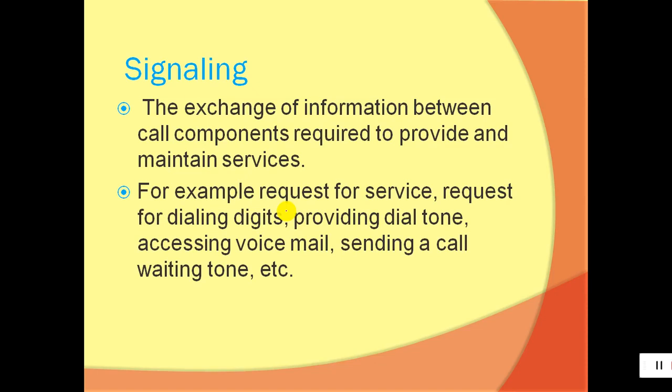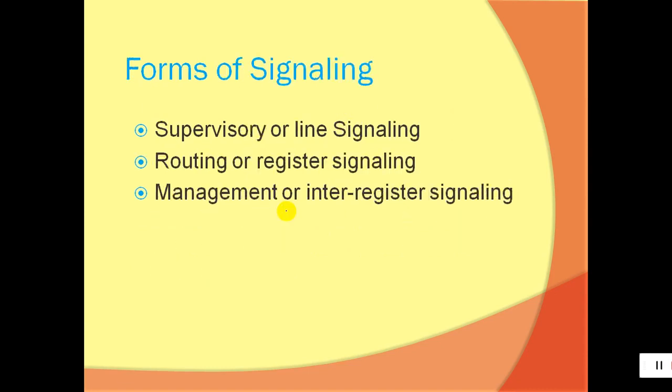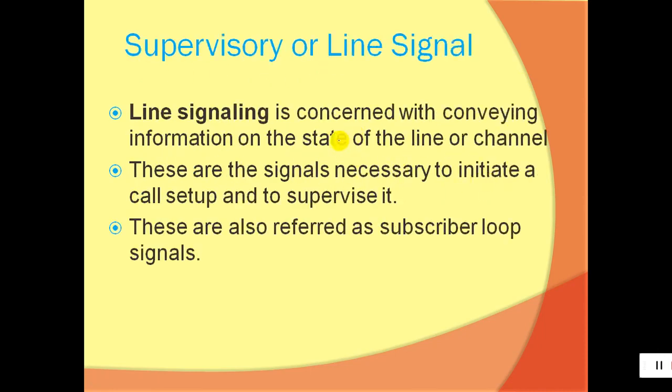The role of signaling can be understood from the definition of switching: to establish, maintain, and release a call. Signaling performs all these functions. It has a broad meaning in any communication system — if you want to make a call successful, signaling plays an important role. There are three types of signaling: supervisory or line signaling, routing or register signaling, and management or inter-register signaling.